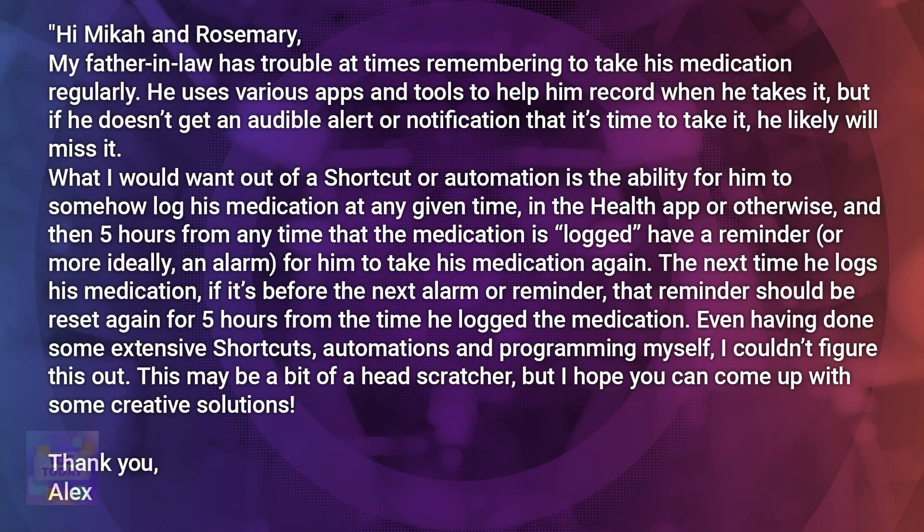Hi, Micah and Rosemary. My father-in-law has trouble at times remembering to take his medication regularly. He uses various apps and tools to help him record when he takes it, but if he doesn't get an audible alert or notification that it's time to take it, he likely will miss it. What I would want out of a Shortcut or Automation is the ability for him to log his medication at any given time in the health app or otherwise, and then five hours from any time that the medication is logged, have a reminder — or more ideally, an alarm — for him to take his medication again. The next time he logs his medication, if it's before the next alarm or reminder, that reminder should be reset again for five hours from the time he logged the medication. So basically, when I take my medication, set a timer or an alarm five hours from now, no matter what.